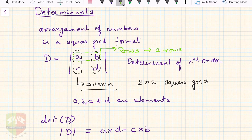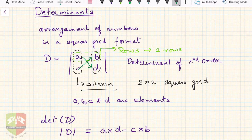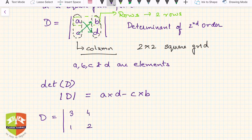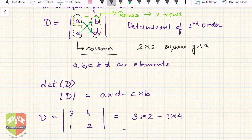To remember how to compute it: multiply top-left by bottom-right, then subtract bottom-left times top-right — giving ad minus cb. For example, if D is the determinant with elements 3, 4, 1, and 2, then the value is 3×2 minus 1×4, which is 6 minus 4, which equals 2.